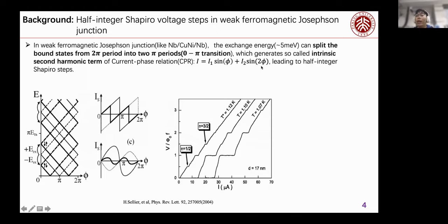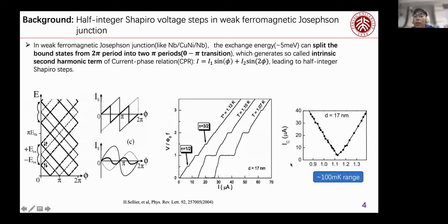And this 2φ term, which is called the second harmonic term, will generate the half-integer Shapiro Steps. In this paper, they observed half and three-half integer Shapiro Steps and some integer steps. But they found that the half-integer Shapiro Steps can only exist in a small temperature range, which is 100 millikelvin, which is very small.